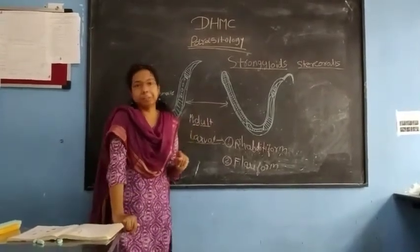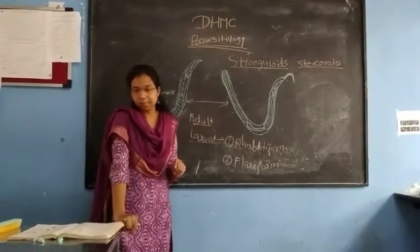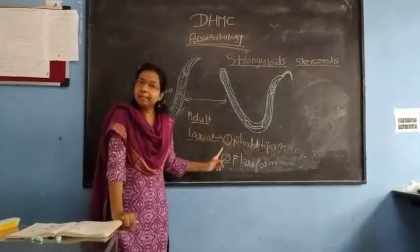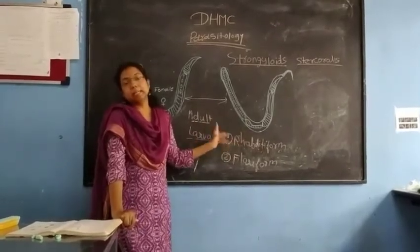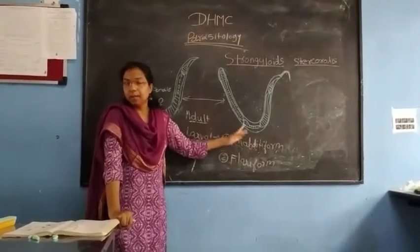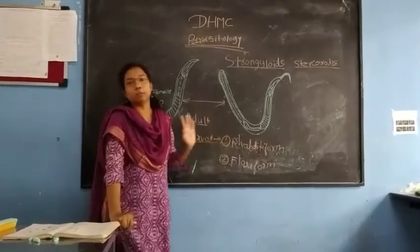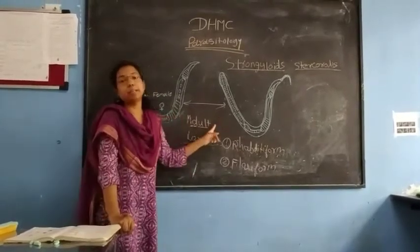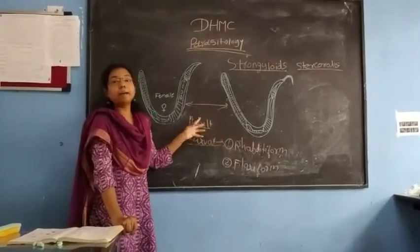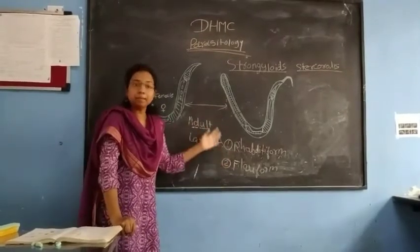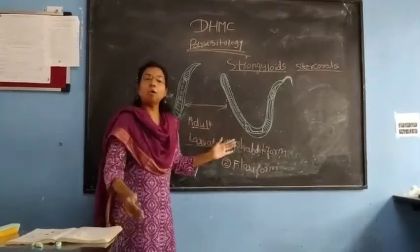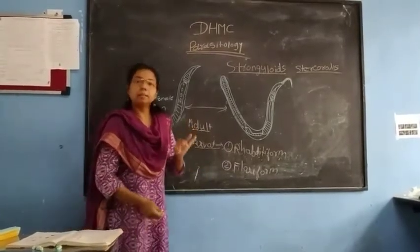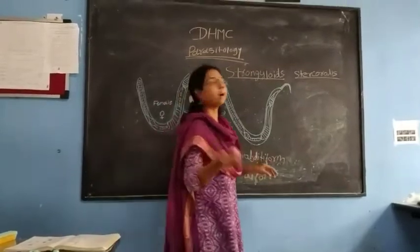Another important feature in the case of S. stercoralis is that, apart from living in the intestine, the male and female parasites can also live inside the soil — in the environment. This is called the free-living form.